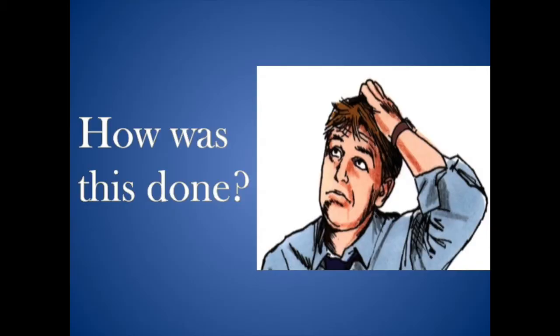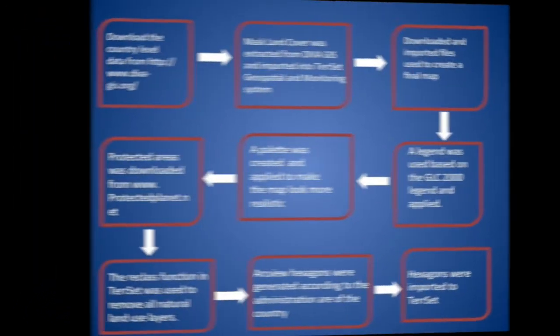So, how was this done? Firstly, download the country level data from www.divagis.org. The land cover was then extracted from DIVA GIS and imported into Tercet, which is a geospatial and monitoring system. Depending on what data you need for your country, other files were also downloaded and imported in order to create a final map. The legend associated with the map was based on the GLC 2000 legend.